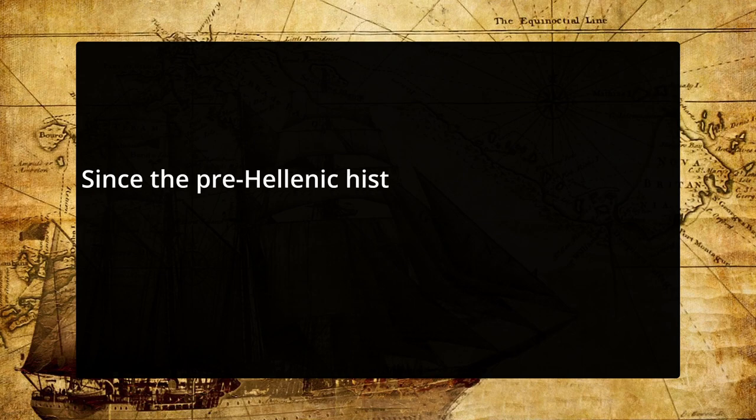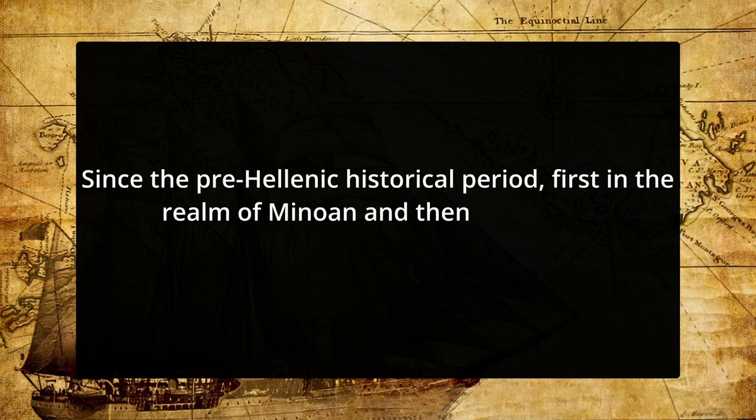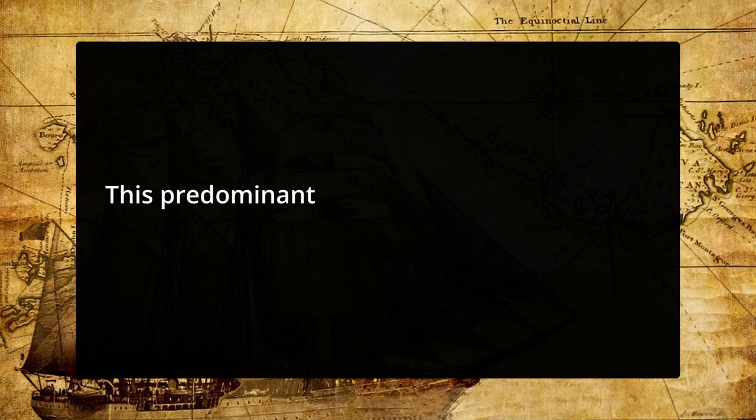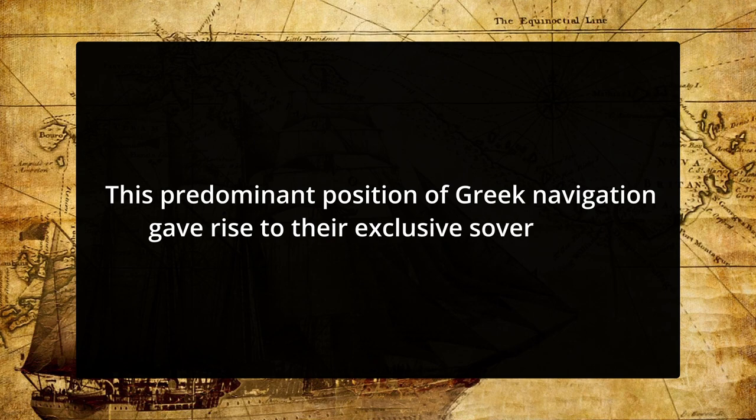Since the pre-Hellenic historical period, first in the realm of Minoan and then during the Mycenaean civilization, the Ionian and Aegean tribes of Greece occupied a prominent position in world trade and navigation. This predominant position of Greek navigation gave rise to their exclusive sovereignty over the whole Mediterranean at the beginning of the classic Hellenic era and immediately after the end of the Persian wars. The overall development of maritime trade followed the peak of Hellenic civilization.